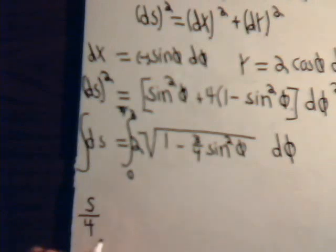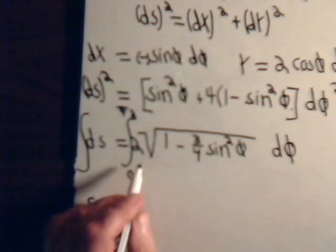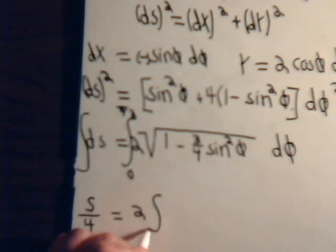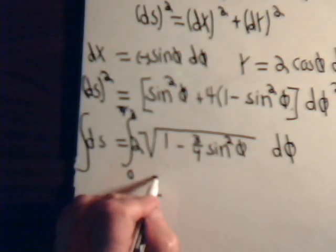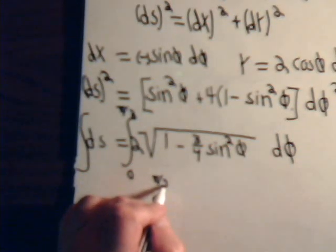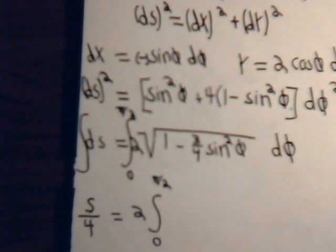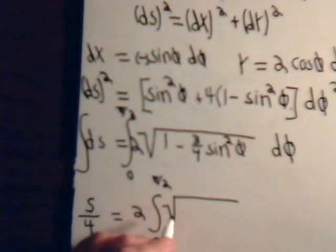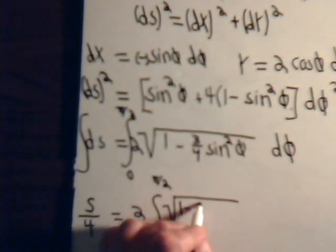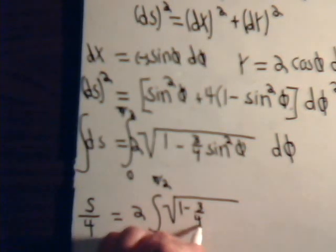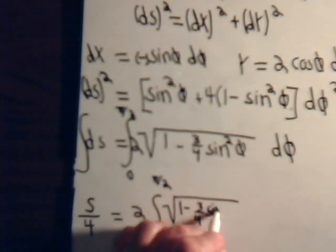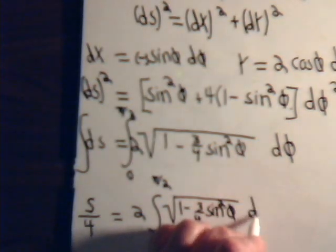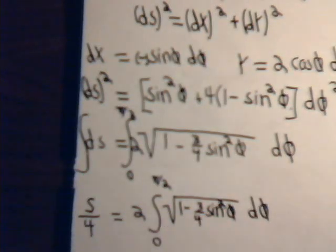So this is going to be s over 4, where s is the arc length of the entire ellipse. So this equals, take the 2 to the outside, we have the integral 0 to pi over 2 times the square root 1 minus 3 fourths sine squared phi d phi.